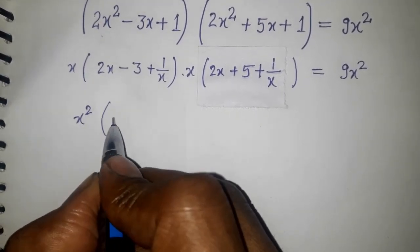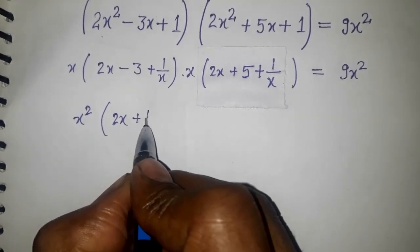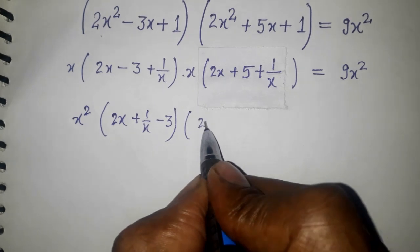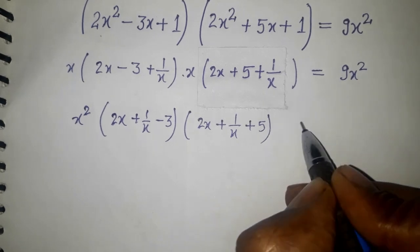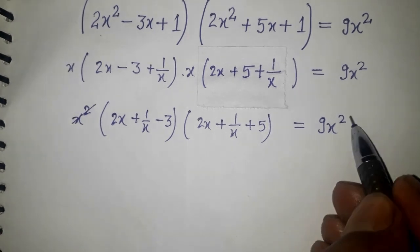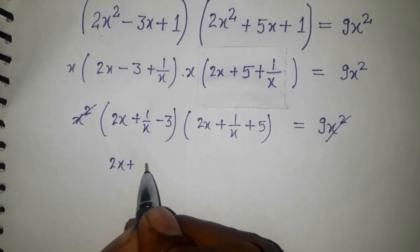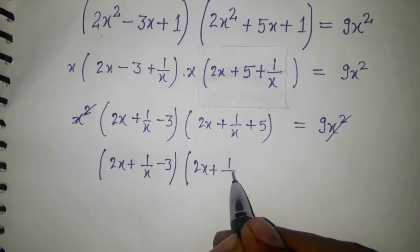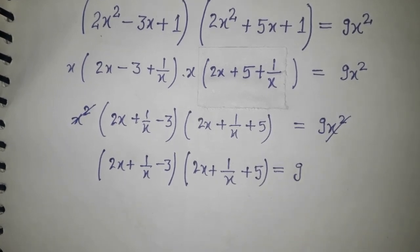The two x's on the left multiply together to give x², which then cancels with the x² on the right side. So we can cancel x² from both sides, leaving us with (2x + 1/x - 3)(2x + 1/x + 5) = 9.